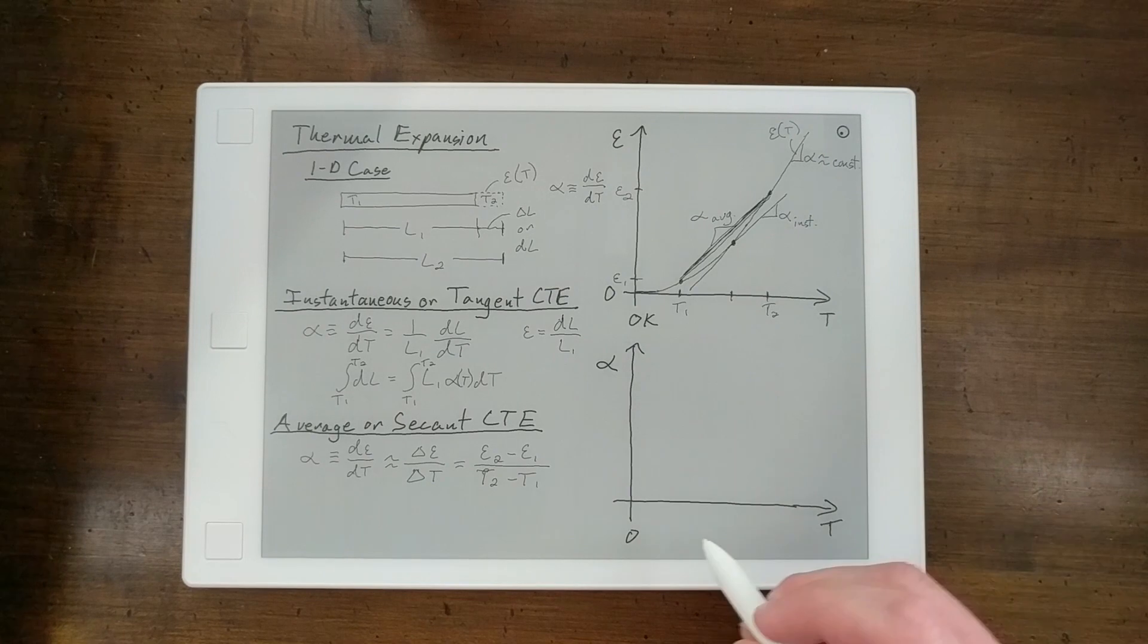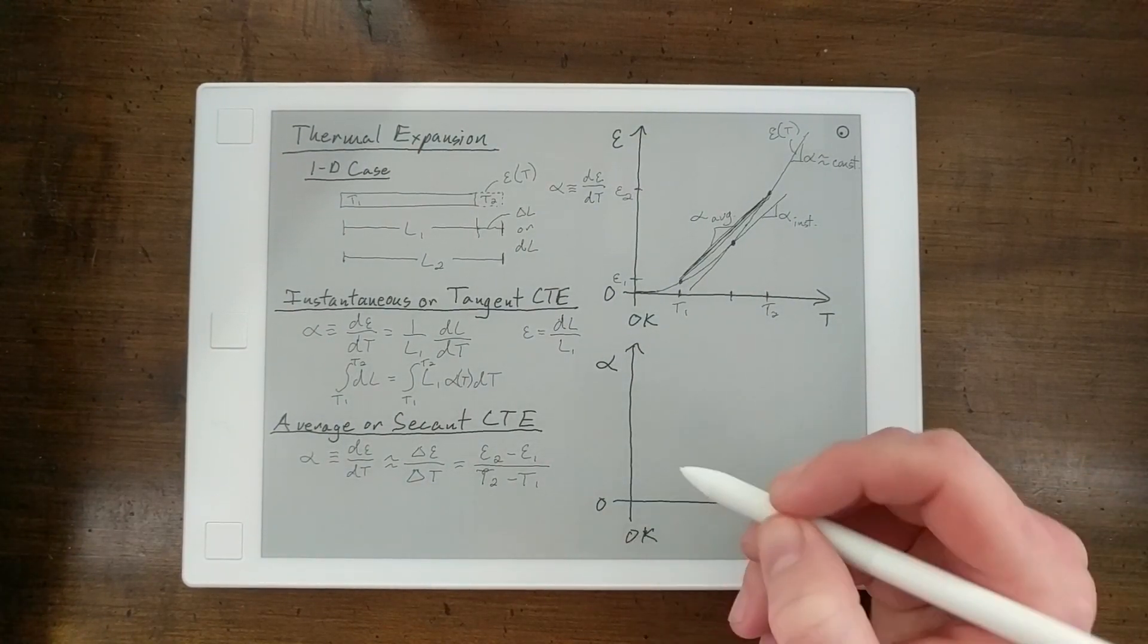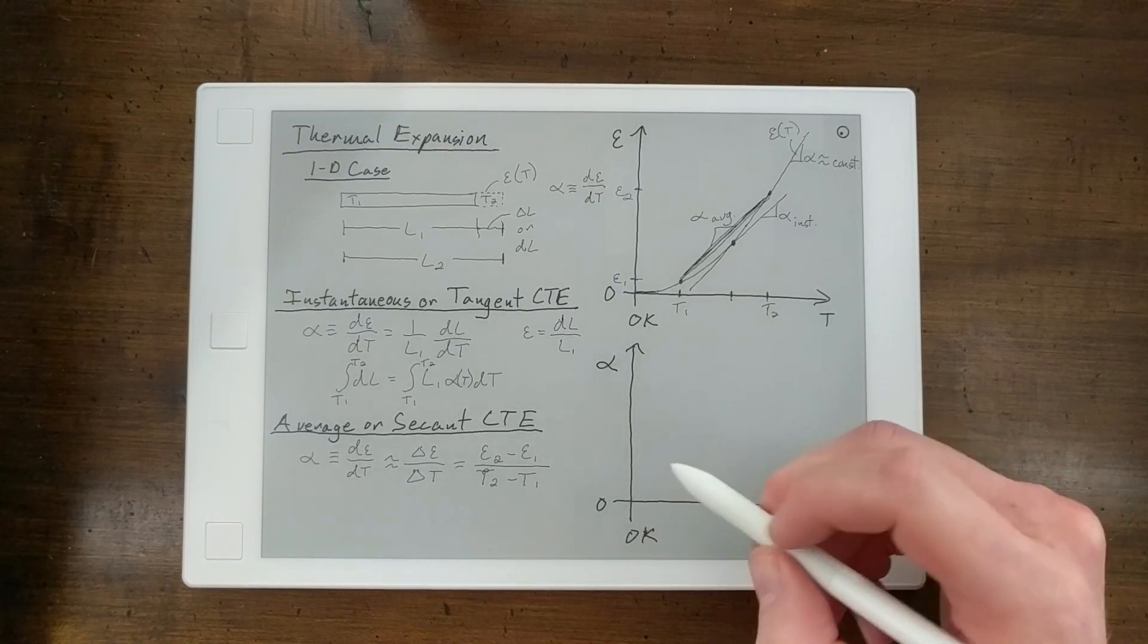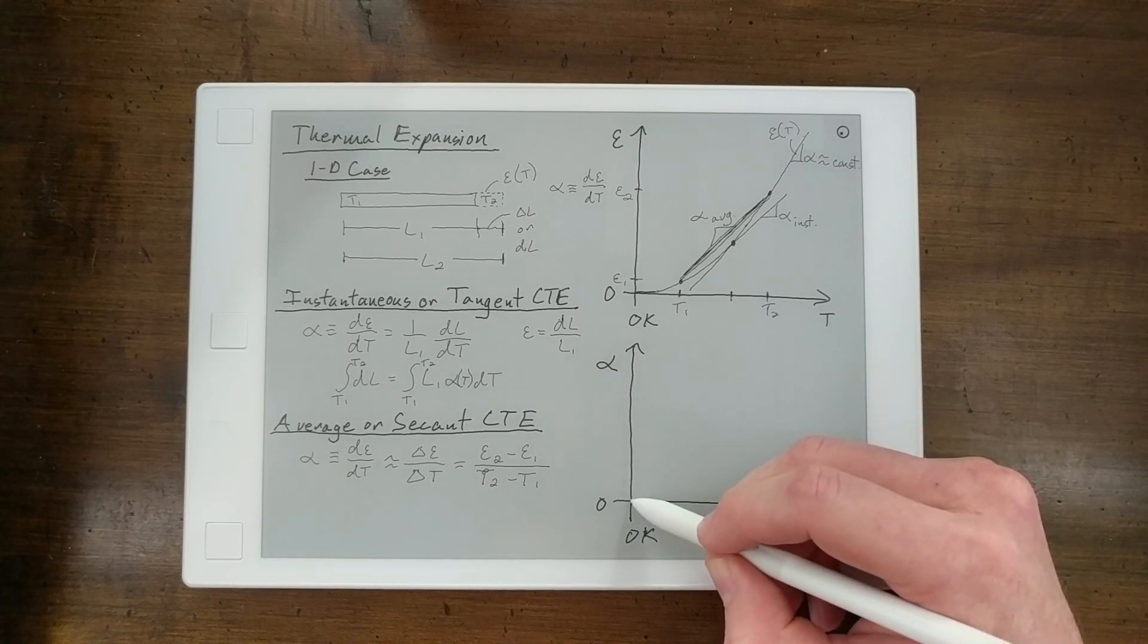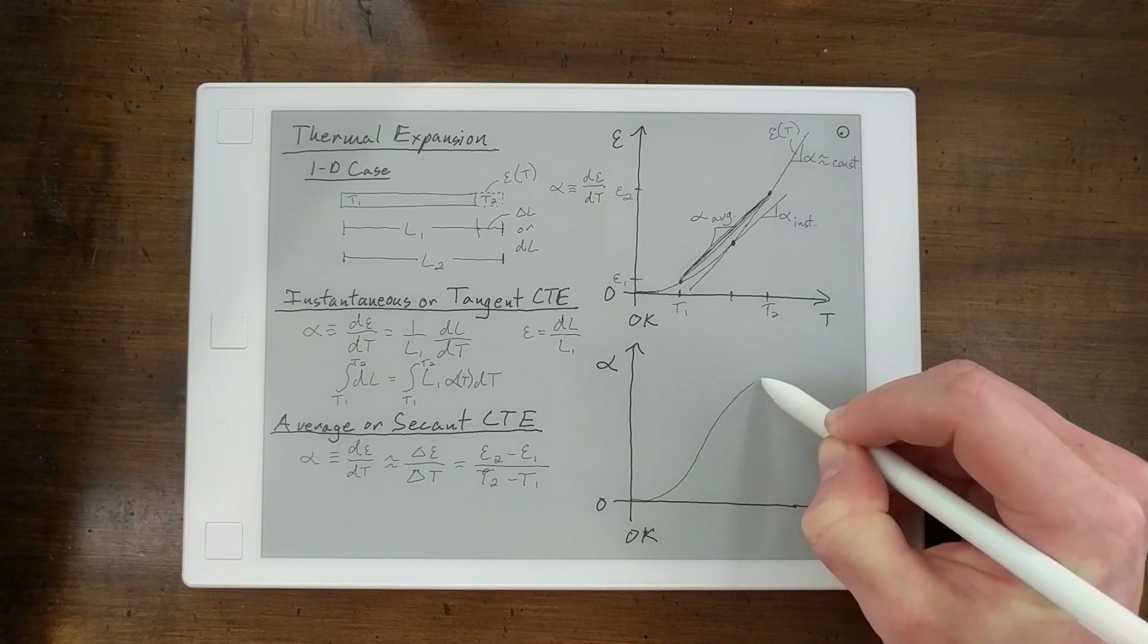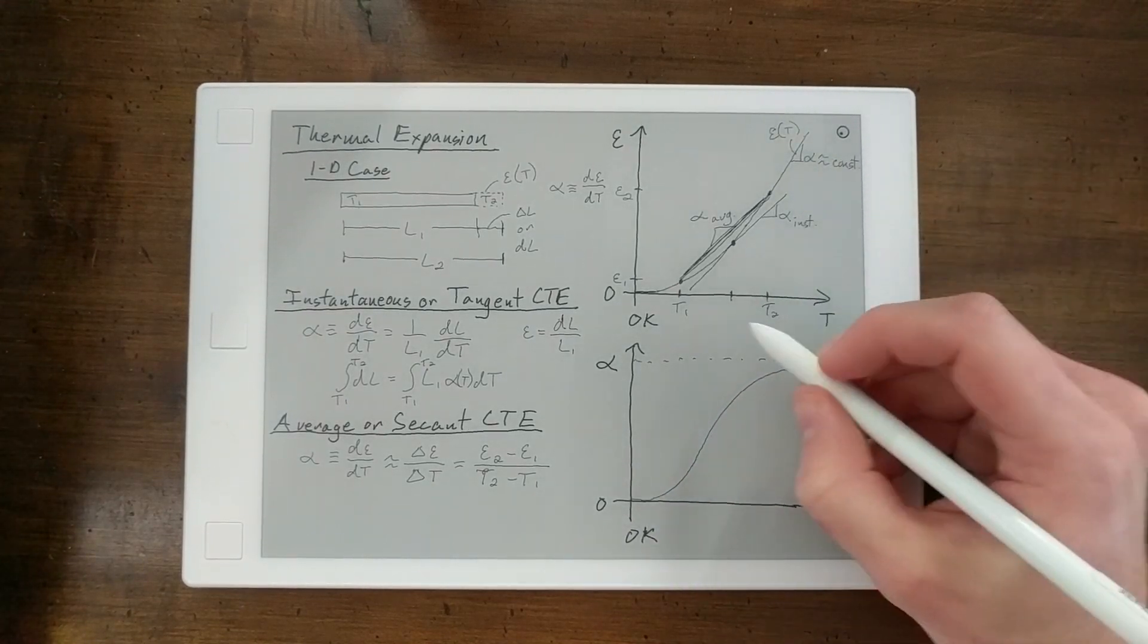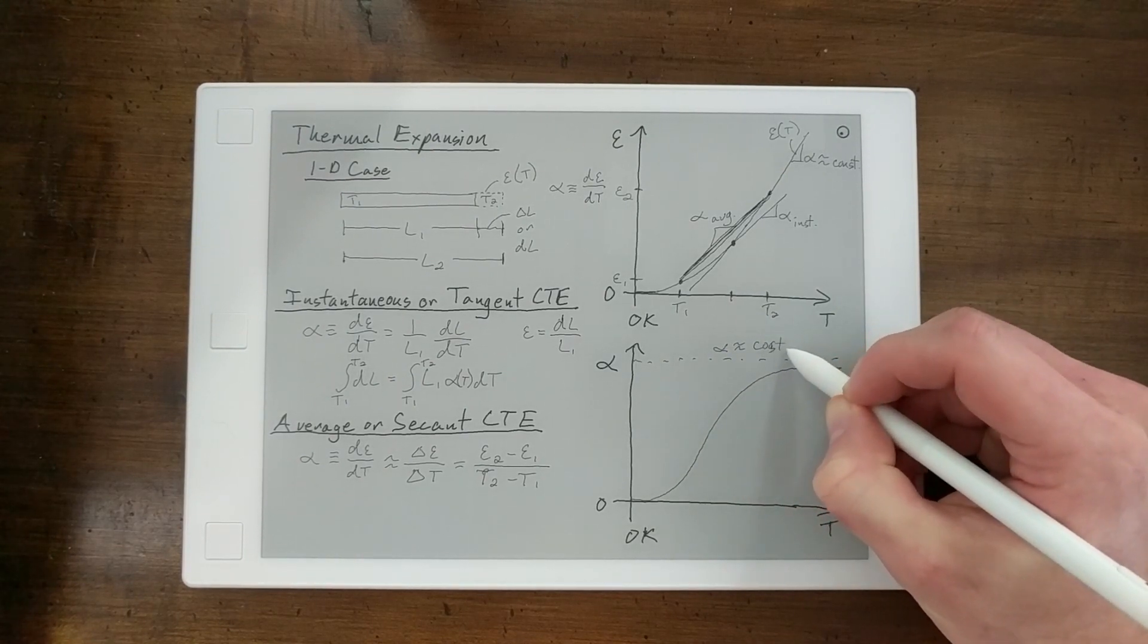Again, starting at zero Kelvin, and that would be zero thermal expansion coefficient. If you take a look at the CTE, or the instantaneous CTE versus temperature, it'll start out at zero, be zero, and then it'll move up quickly, and then start to saturate. And that saturation CTE is equivalent to that alpha equaling approximately a constant value.